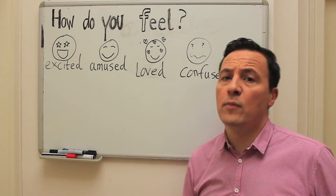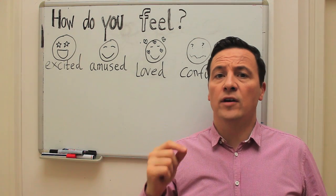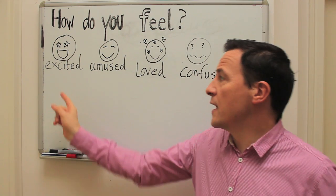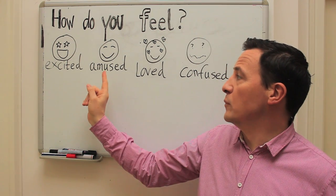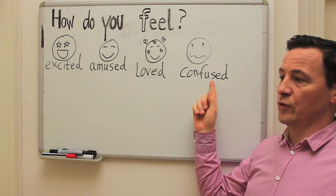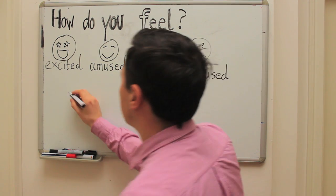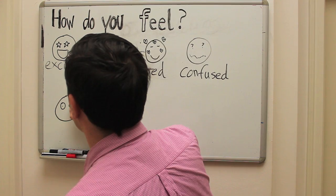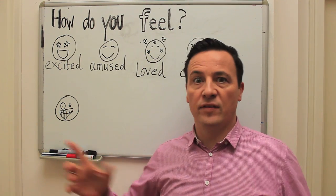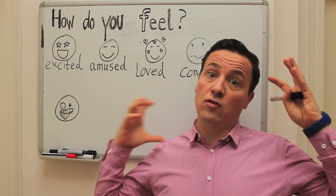What's very important about these adjectives is to put the stress on the correct syllable, so to pronounce them correctly: excited, amused, loved, confused. Okay, the next one — how do you say 'verrückt' in English? You say 'crazy' — I feel crazy.